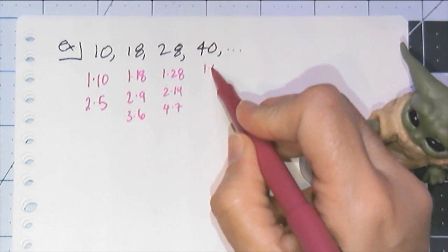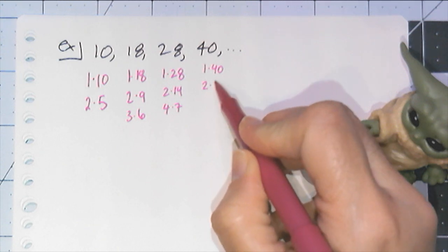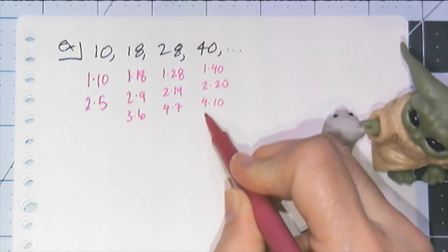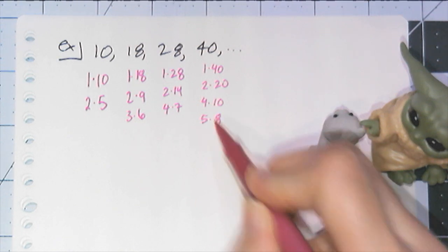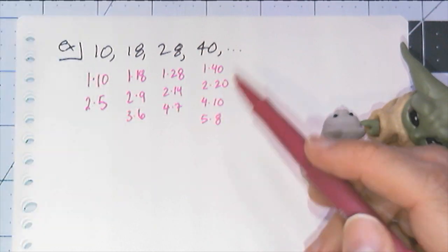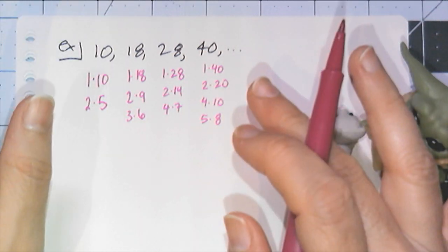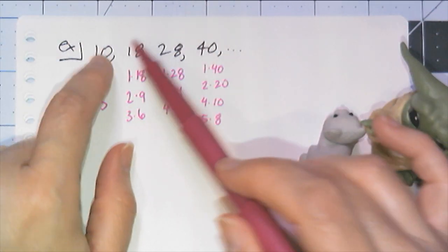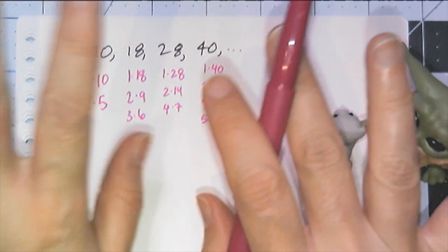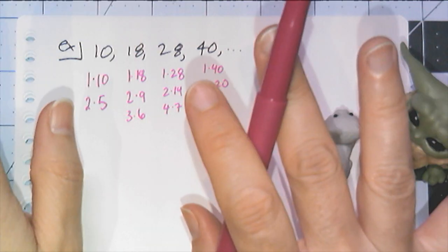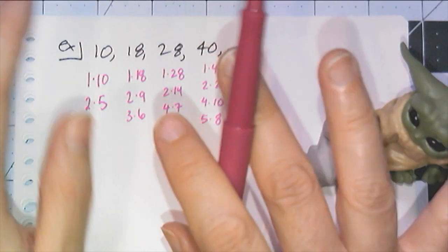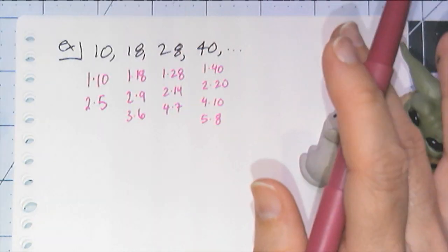And then 40 can be 1 by 40, 2 times 20, no 3, 4 by 10, 5 by 8, and 6 and 7 aren't going to work. These numbers here represent all of the possible ways that I can represent these numbers as rectangles. And what I'm trying to find is the pattern, where the length increases by a certain pattern, and the width increases by a certain pattern.